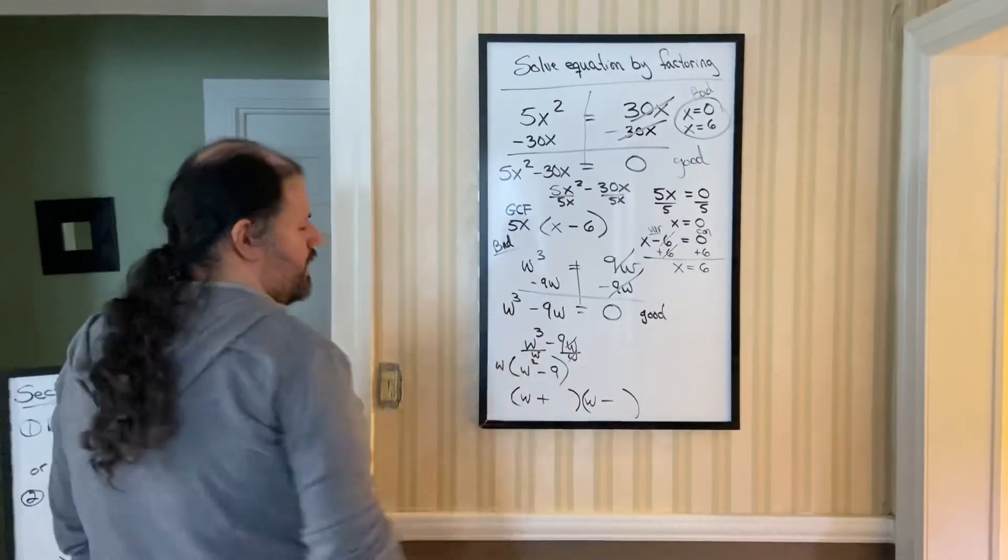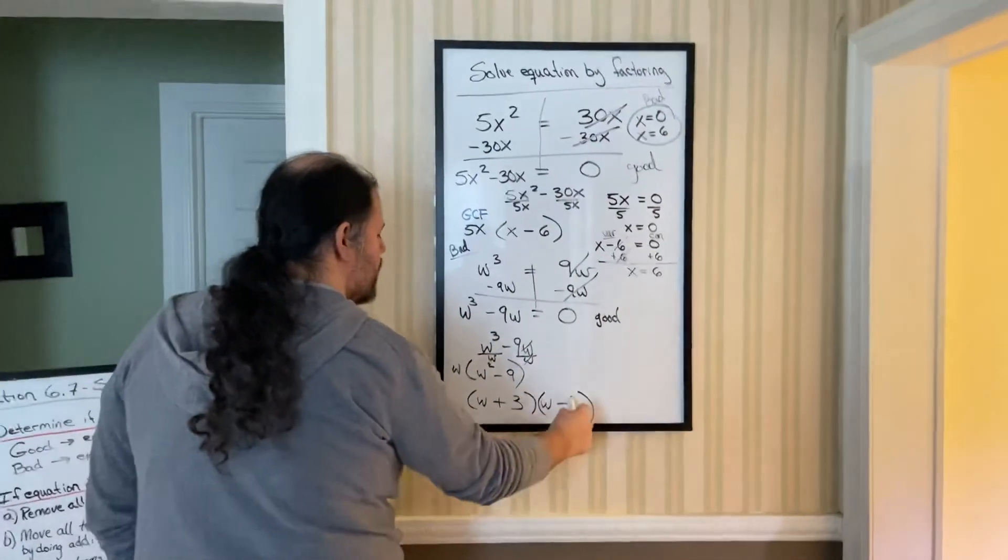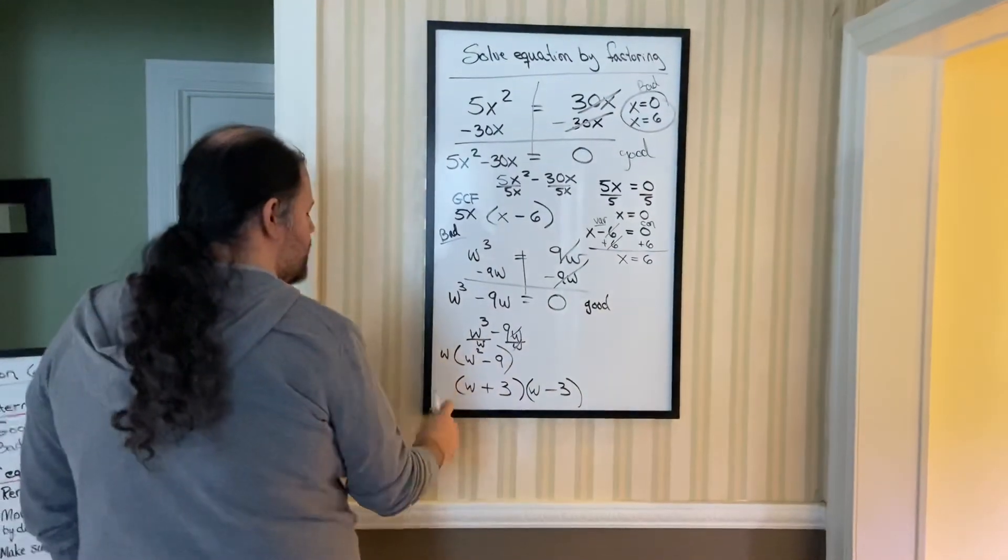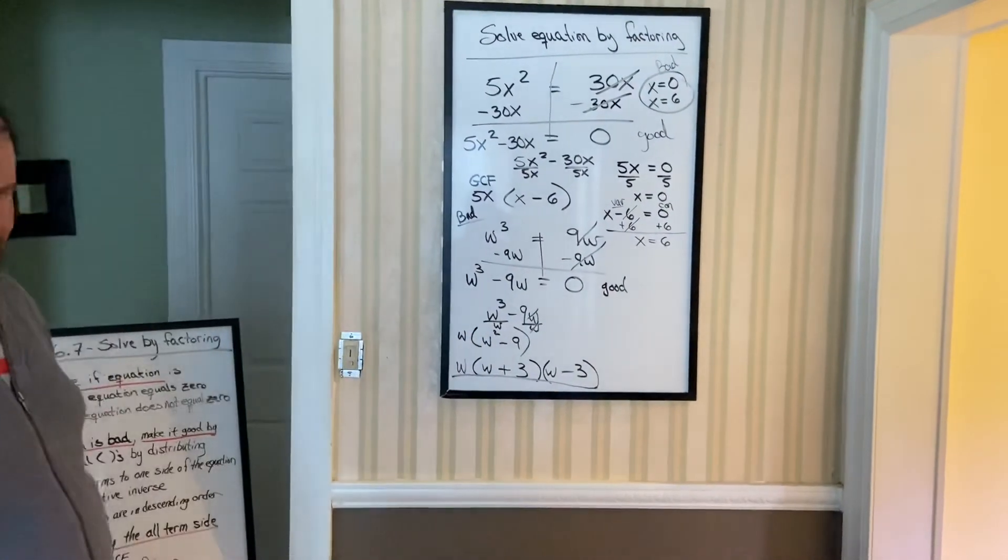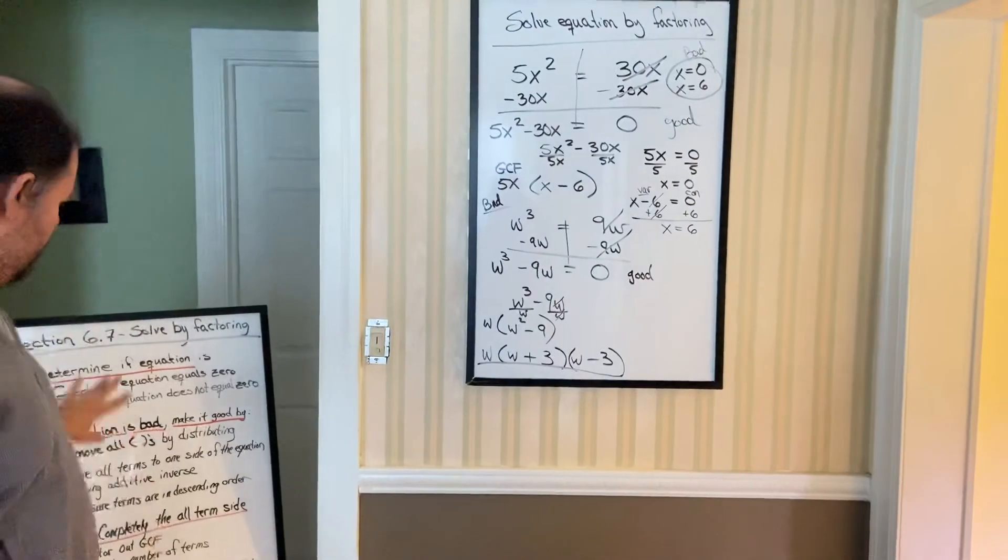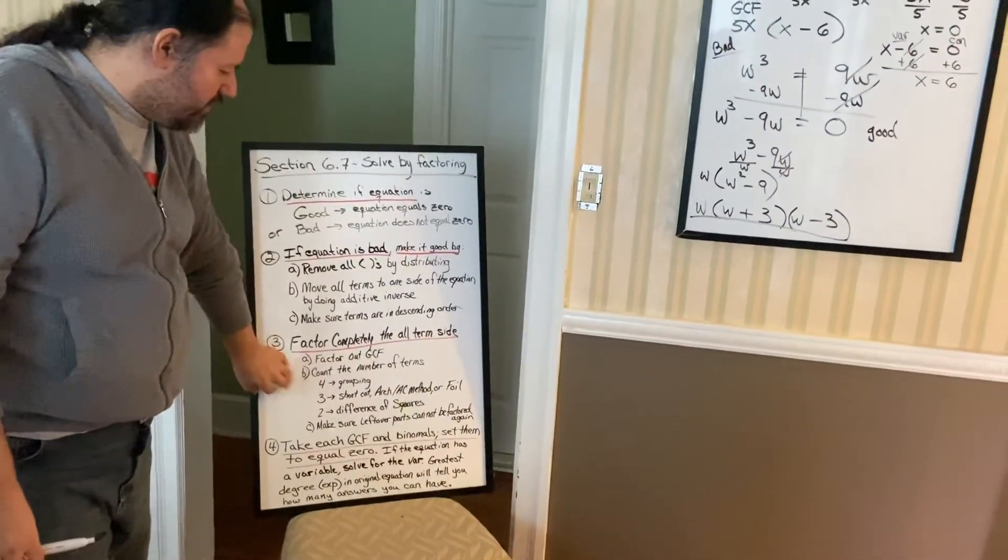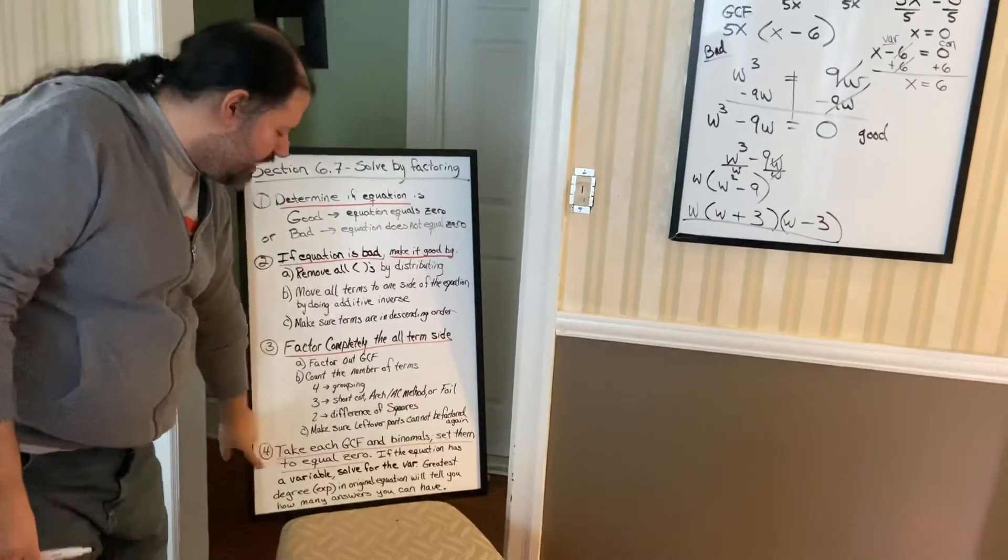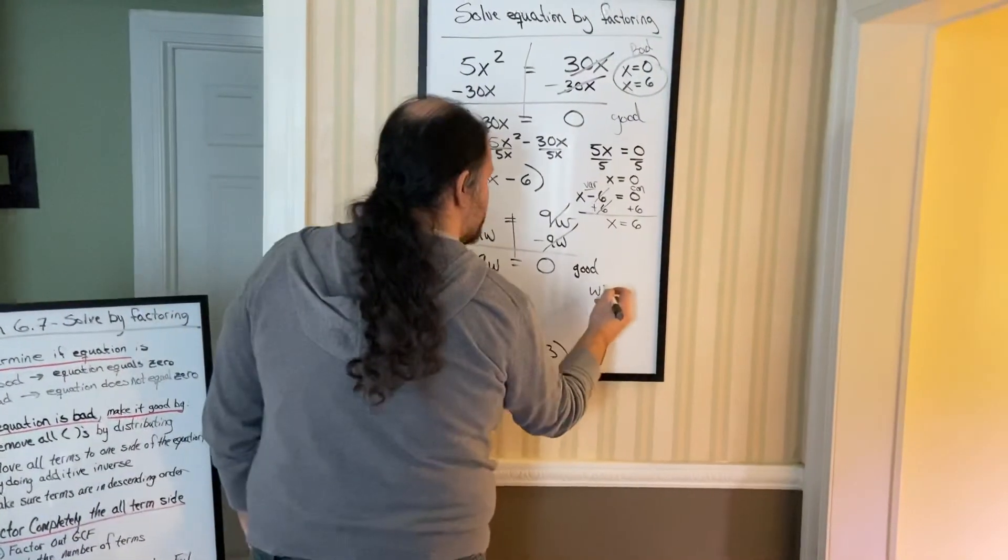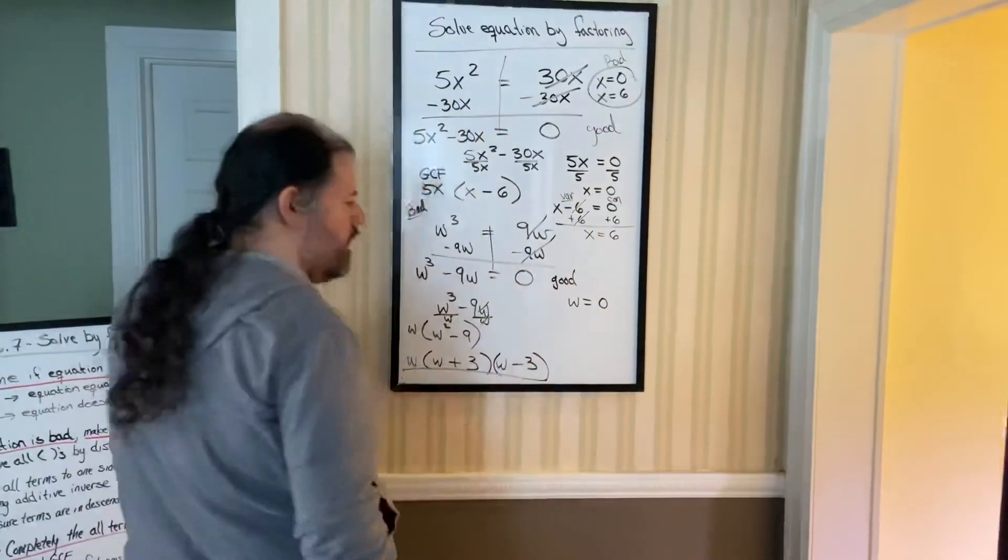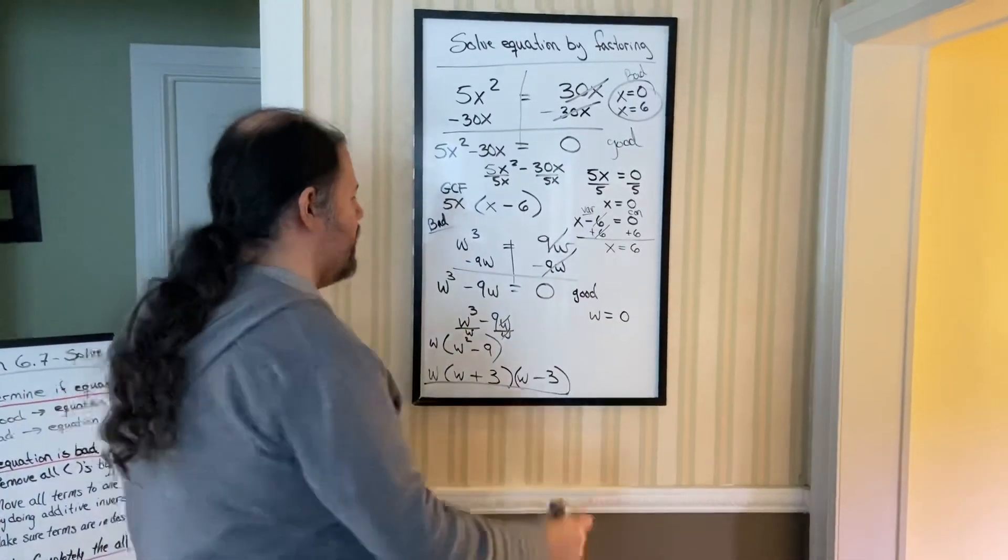Bring down the GCF so that you're done factoring. But that's not your final answer. Remember, you still have to do step four here. A lot of students forget that after they're done factoring completely, they have to take the GCF, which is the W, set that equal to zero. Notice we have a letter here, but there's nothing to move or anything else. So there's one answer.